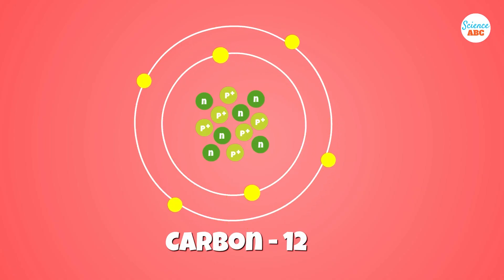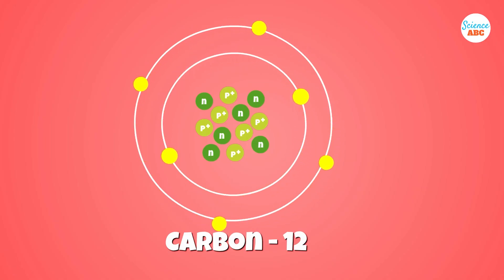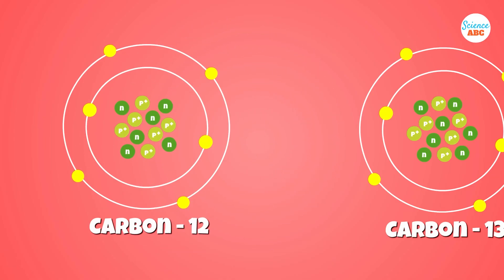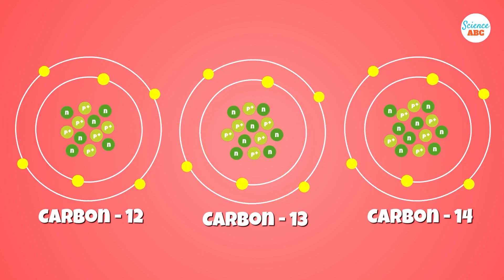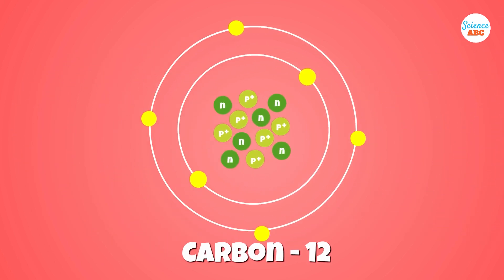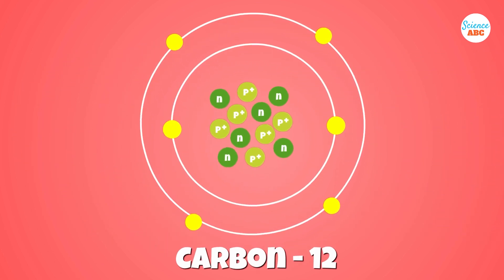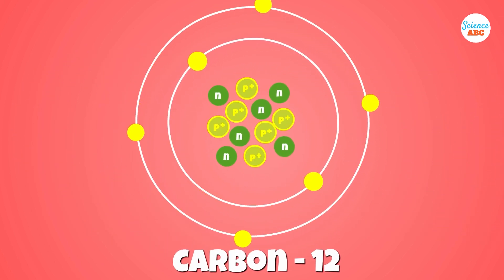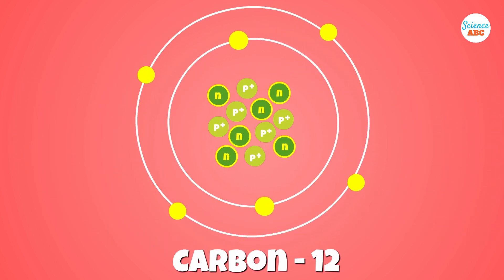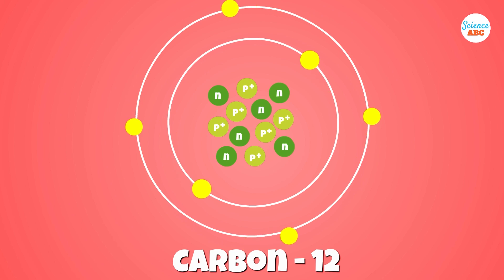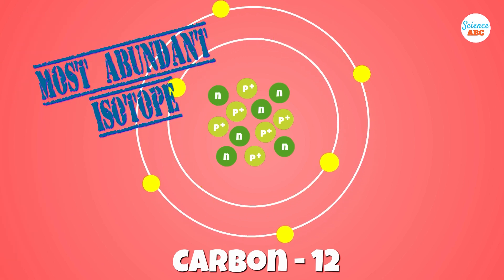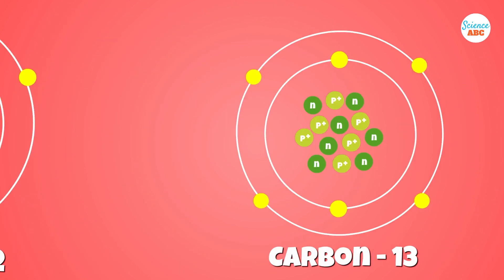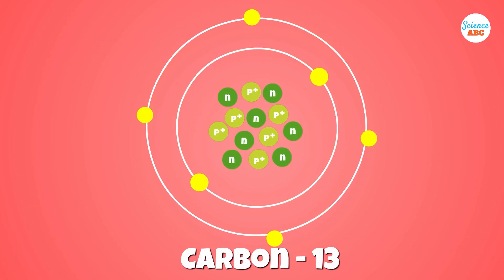Carbon, one of the most fundamental elements for all of life on Earth, also has three isotopes. The first isotope, carbon-12, has six protons and six neutrons. Almost 99% of carbon on our planet is carbon-12.